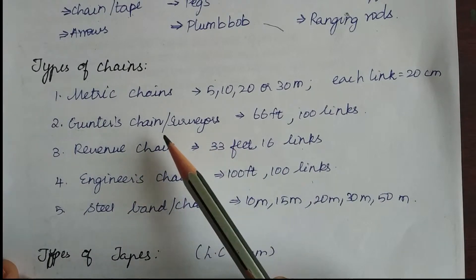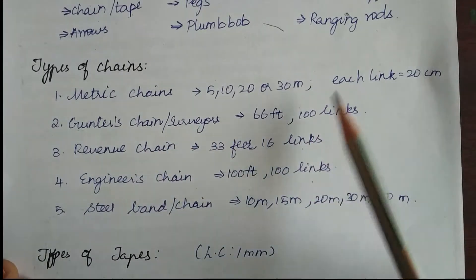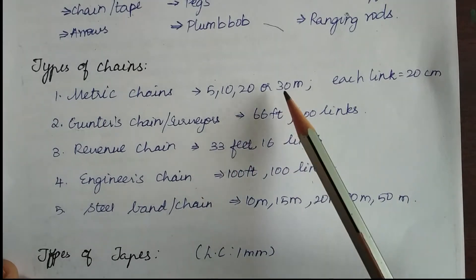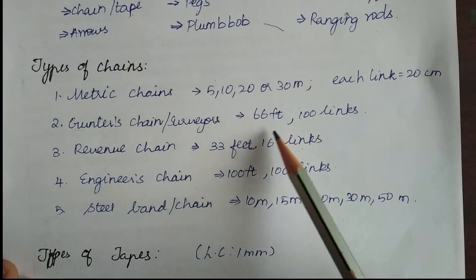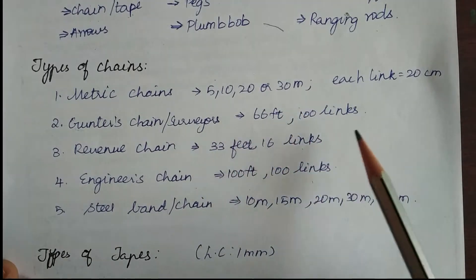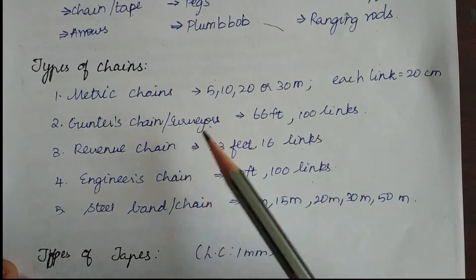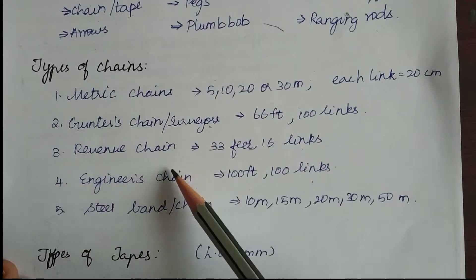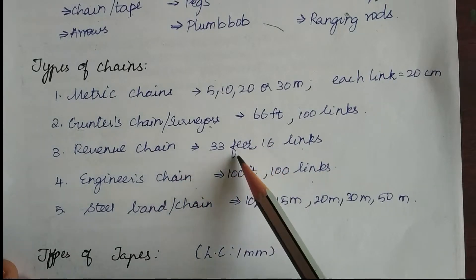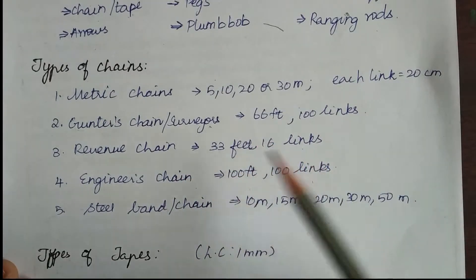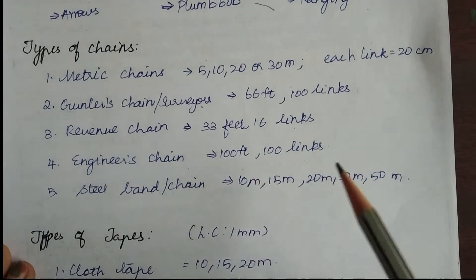The next type is Gunter's chain. Unlike metric chains, this is available in only one length — 66 feet — and it is made up of 100 links. It is also called the surveyor's chain. Next is the revenue chain, which is 33 feet long with 16 links.